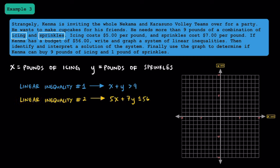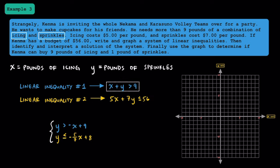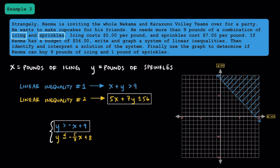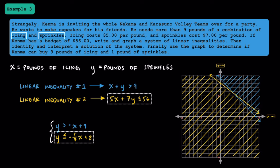For our second linear inequality: 5x plus 7y is less than or equal to 56. Here, 5x represents the total cost of the icing, 7y is the total cost of the sprinkles, and 56 dollars is Kenma's budget. Rearranging into slope-intercept form: y is greater than negative x plus 9, and y is less than or equal to negative 5-sevenths x plus 8. Graphing these, we have a dashed line shading away from the origin, and a solid line including the origin. The area shaded twice represents our solutions. A possible solution is (9, 1): Kenma could buy 9 pounds of icing and 1 pound of sprinkles, giving more than 9 pounds combined and staying under his 56-dollar budget. You could also say something like (8, 2).